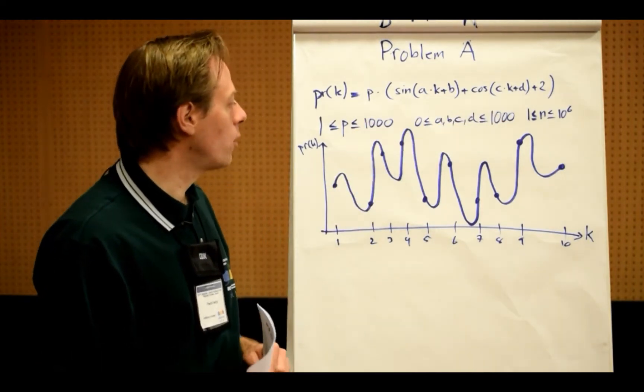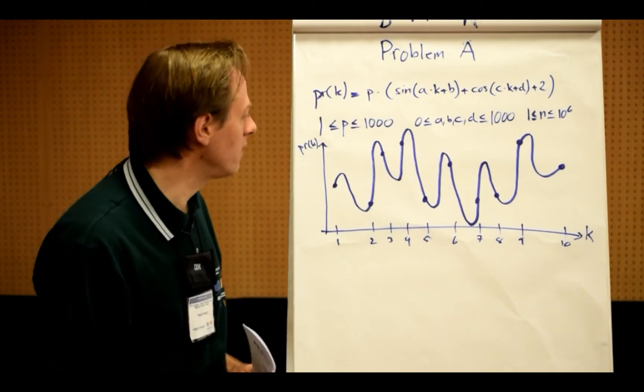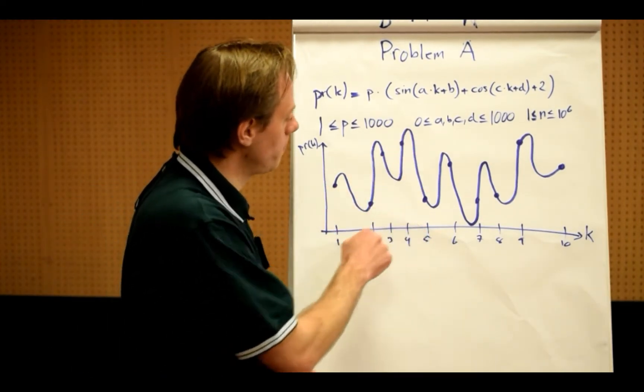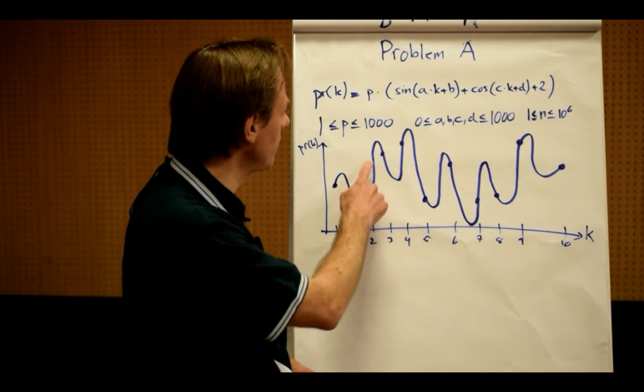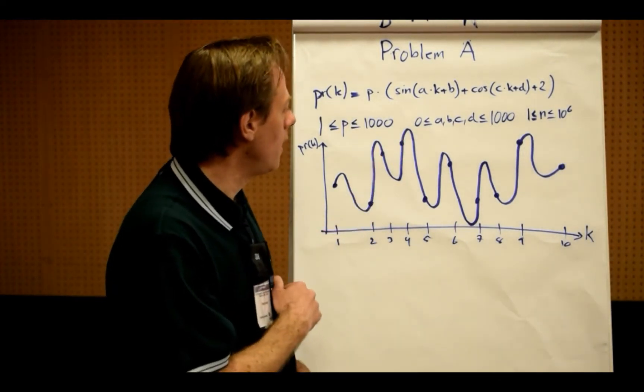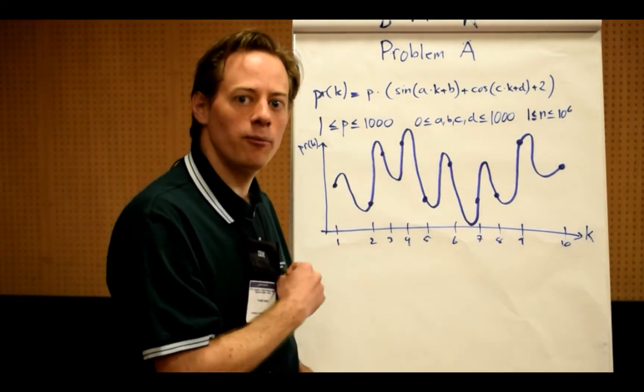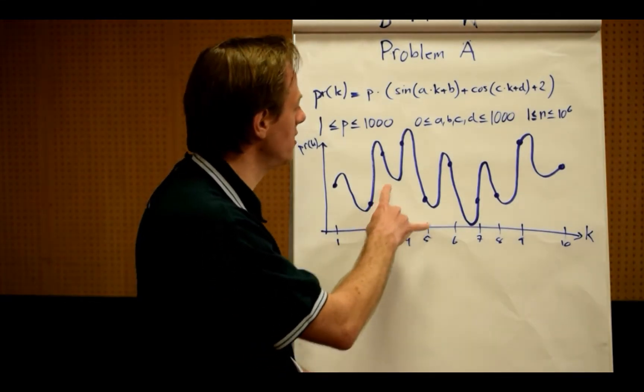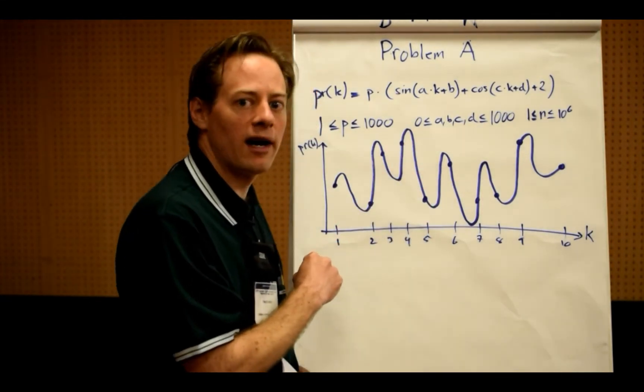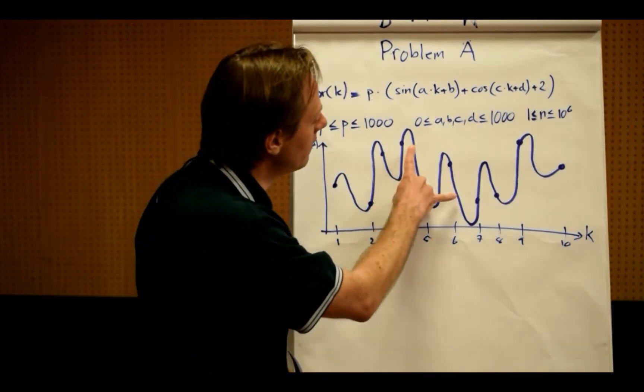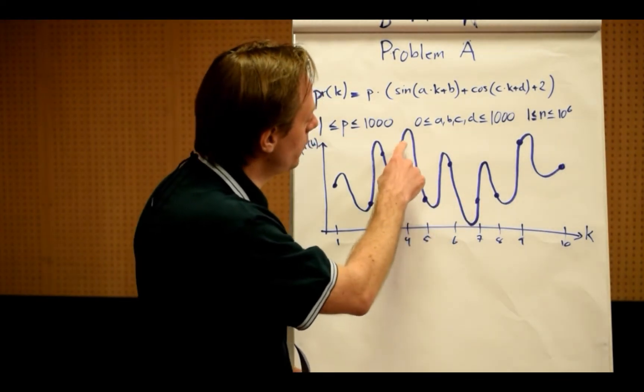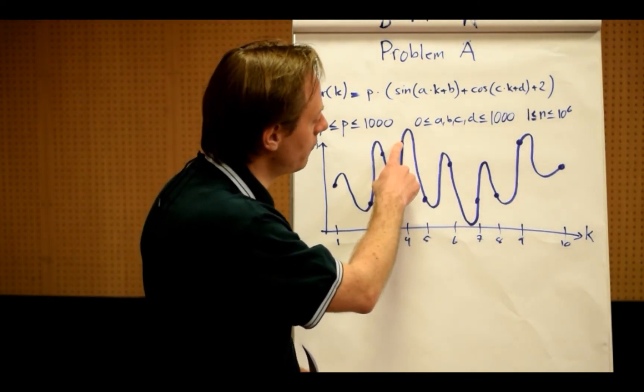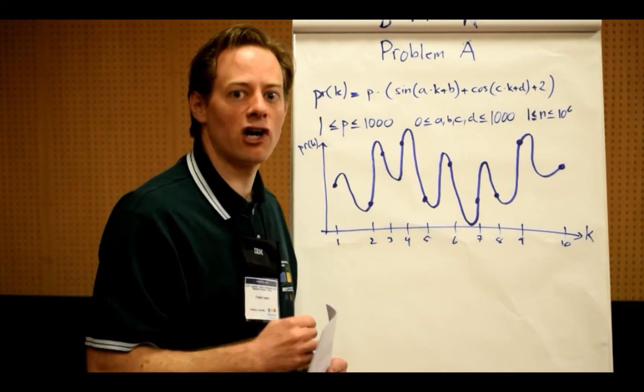The question that you're going to find out is if you plot this function and you take the integer points k, you want to find the pair of points which has the largest difference. So you want to find the pair of points where the difference between the maximum to the left and the minimum to the right is as large as possible.